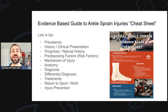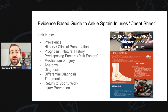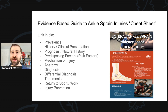I've also created an evidence-based guide to ankle sprain injuries cheat sheet — a handout that goes along with today's lesson. We go over all the basic points: prevalence, history, prognosis, predisposing factors, mechanisms of injury, anatomy, diagnosis, differential diagnosis, treatments, return to sport and work, and injury prevention. I'll leave a link in the show notes — 100% free. It's a companion for what we're going to go over today, and a nice reference sheet you can go back to later.